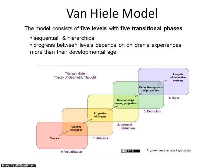The Van Hiele Model consists of five levels with five transitional phases. These sequential levels are hierarchical, meaning that a child moves from level 0 to level 4. Progress between the levels depends on children's experiences in geometry and not just their developmental age.